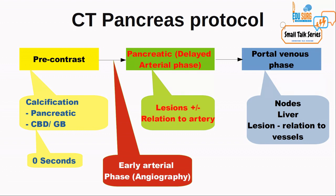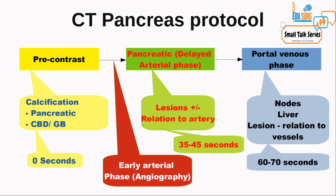The early arterial phase provides an arteriogram and can be added when needed. To summarize: pre-contrast phase at 0 seconds; delayed arterial or pancreatic parenchymal phase at 35 to 45 seconds without bolus tracking; portal venous phase at 60 to 70 seconds without bolus tracking, or 50 seconds with bolus tracking. Now we will dive into the console and see some common findings in the pancreas protocol CT.